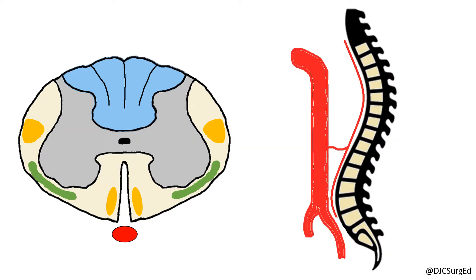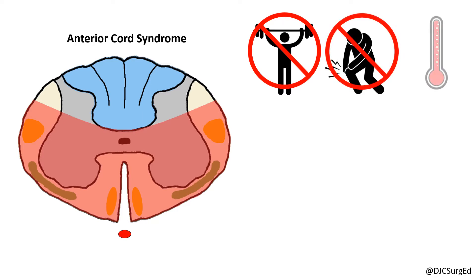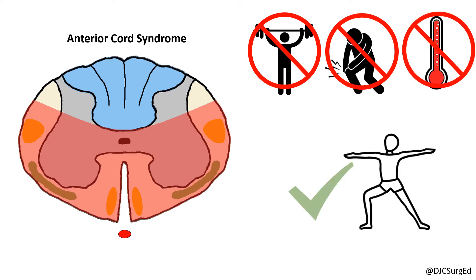Anterior cord syndrome is due to cord ischemia secondary to a vascular injury or malperfusion of the anterior spinal artery, with resultant loss of motor function and pain and temperature sensation, with sparing of the dorsal columns and proprioception.